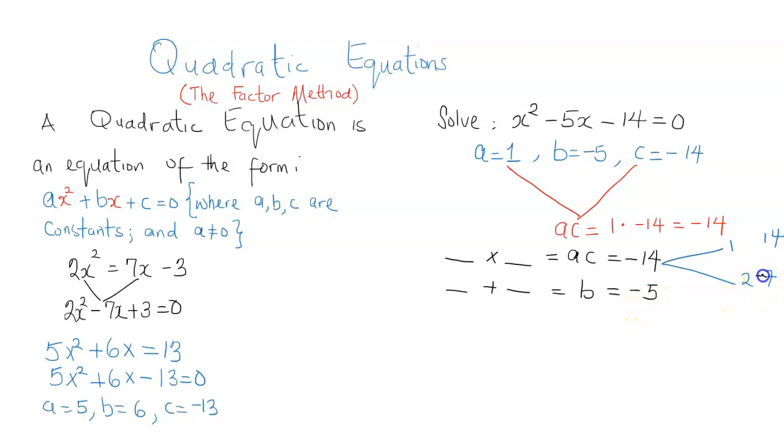2 times negative 7, negative 14. 2 plus negative 7, negative 5. So this tells us that the two numbers are 2 and negative 7.